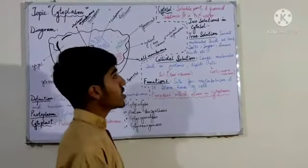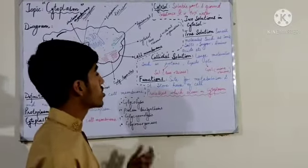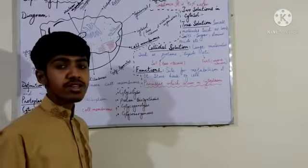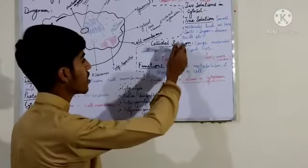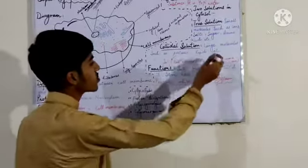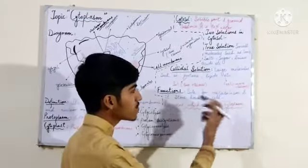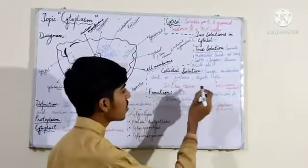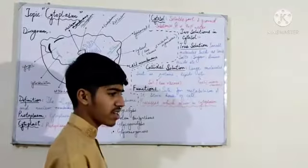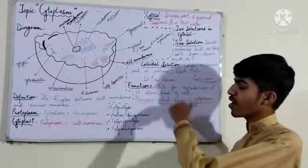True solution is made of small molecules such as ions, salts, sugar, amino acids, etc. Colloidal solution is made of large molecules such as proteins, lipids, etc. Colloidal solution has two further types: sol and gel. Sol is basically less viscous, and gel is more viscous.